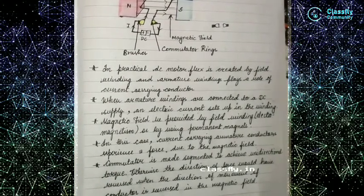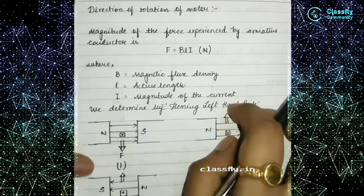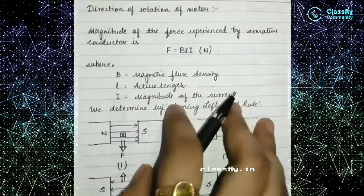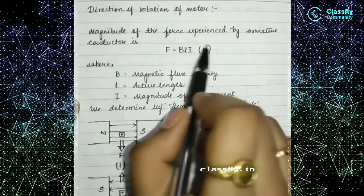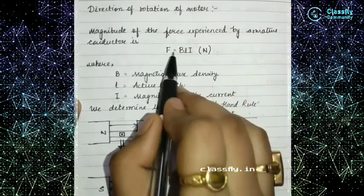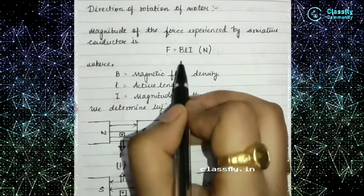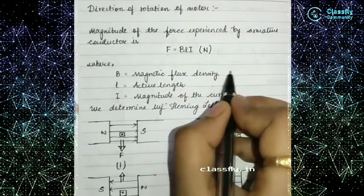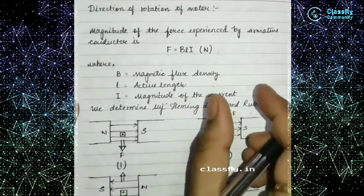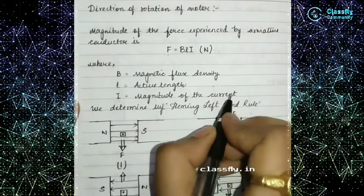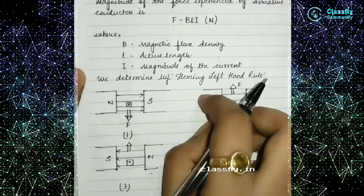The motor works on the principle of Lorentz force. The magnitude of force experienced by the armature conductor is F = BLI (in Newtons), where B is the magnetic flux density generated by the field windings, L is the active length of the conductor, and I is the magnitude of the current.